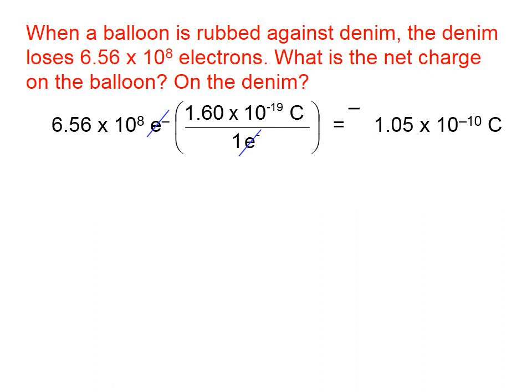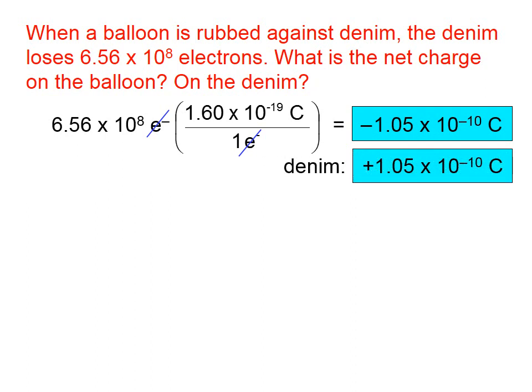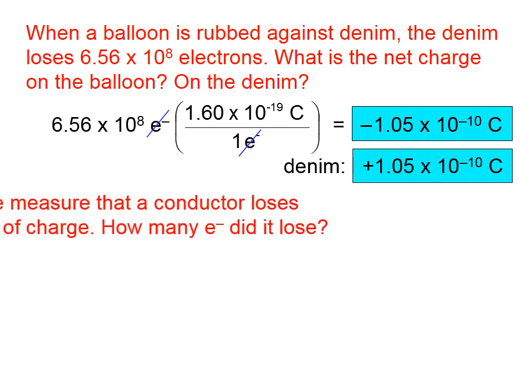That's the magnitude of charge that is on the balloon, and that's because the balloon has gained electrons. The denim has lost electrons, so its net charge is positive that amount. You can see that the total amount of charge hasn't changed. We've just moved electrons from denim to balloon.